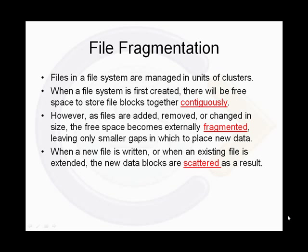Files in a file system are managed in units called clusters. When a file system is created, there is free space to store file blocks together contiguously, allowing for rapid sequential file reads and writes. However, as files are added, removed, or changed in size, the free space becomes externally fragmented, leaving only small gaps in which to place new data.